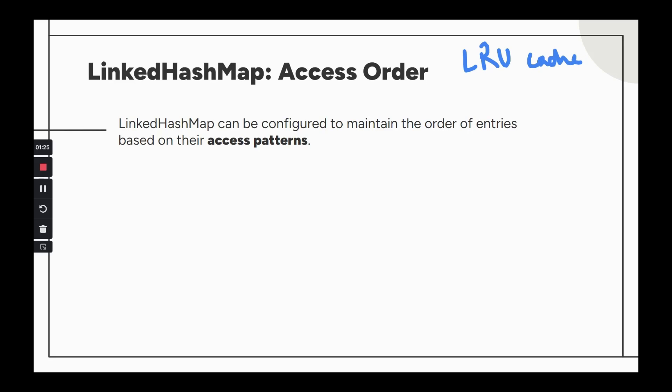The access order feature is important for LRU cache implementation. As the name suggests, the least recently used element is removed from the cache. If you have 100 elements and the cache is full, you need a cache eviction technique. With a limited cache size, you follow a certain eviction policy to decide which element to remove — the first, last, or middle.